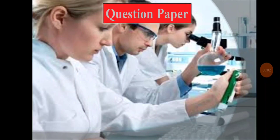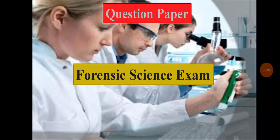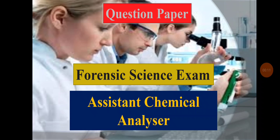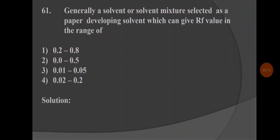Welcome to my channel. Today we are going to discuss some questions from the question paper of forensic science exam for assistant chemical analyzer. Question 61: Generally, a solvent or solvent mixture selected as a paper developing solvent which can give an RF value in the range of — option 1: 0.2 to 0.8, option 2: 0.0 to 0.5, option 3: 0.01 to 0.05, option 4: 0.0 to 0.2.